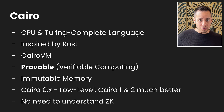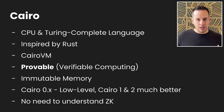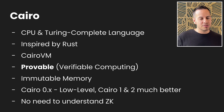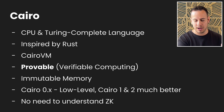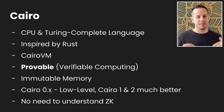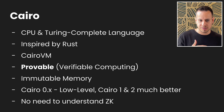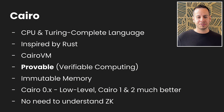The cool thing about Cairo is that you don't need to understand all the math and cryptography behind zero-knowledge and ZK, because you don't have to deal with that when writing Cairo smart contracts. All the zero-knowledge magic happens under the hood when you convert your Cairo code to Sierra and from Sierra to Cairo assembly — in the prover of StarkNet and the sequencer. You just need to learn the syntax, similar to Rust, to harness the power of zero-knowledge proofs and Starks.